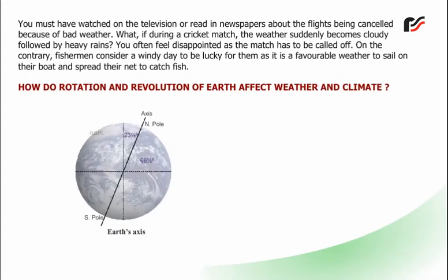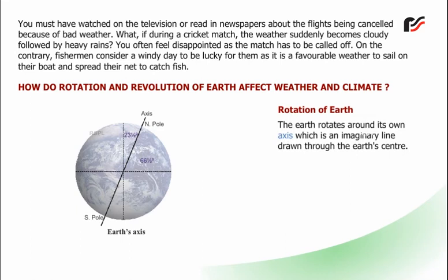How do rotation and revolution of Earth affect weather and climate? The Earth rotates around its own axis, which is an imaginary line drawn through the Earth's centre. The spin takes 24 hours to complete.